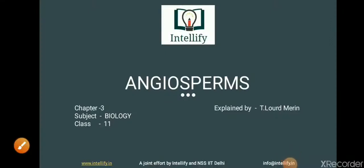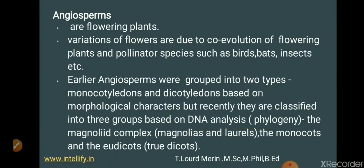Hi everyone, this is Professor Marin with another topic: angiosperms, taken from chapter 3, subject biology for class 11. Angiosperms are nothing but flowering plants — jo bhi plant jo flowers deta hai, they all come under angiosperms. The different varieties of flowers we see is due to co-evolution of flowering plants and pollinator species such as birds, bats, insects, etc., since these plants depend heavily on pollinators.